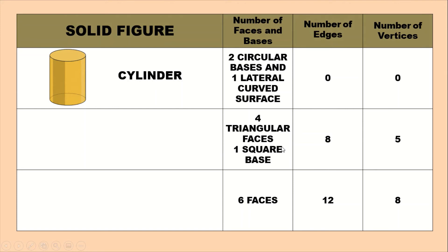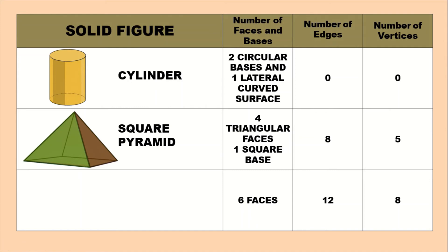Let's move on to the square pyramid. A square pyramid is composed of four triangular faces and one square base, giving it five faces in total. The number of edges is eight, and the number of vertices is five — four at the base corners and one at the top apex.